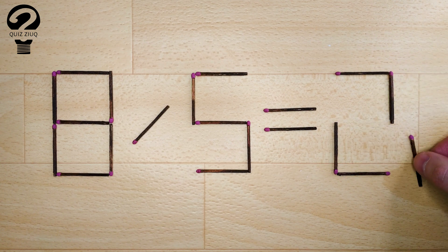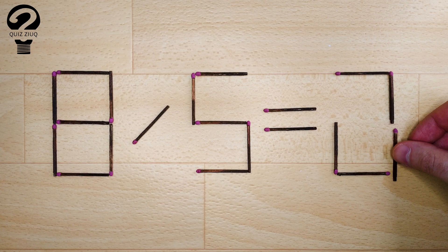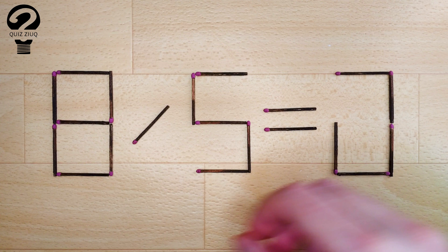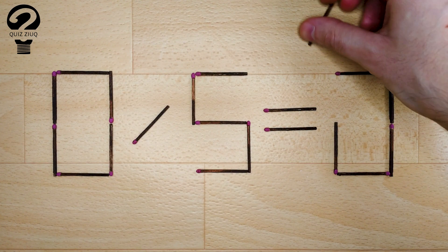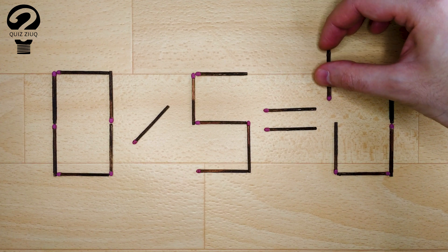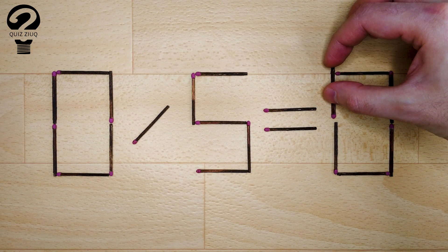How is this little puzzle solved? For this, we just need to move two matches. And now, when we check, 0 divided by 5 equals 0. 0 equals 0. Our equation is correct. The puzzle is solved.